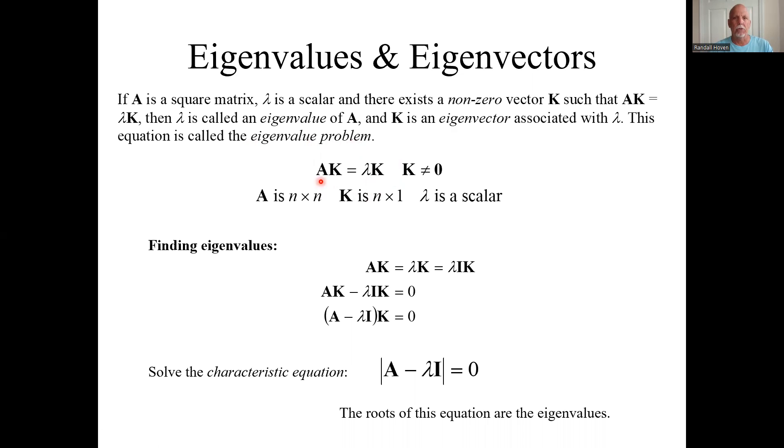You're given this square matrix A. We want to find the K's and the lambdas that make this a true statement, and the K's can't just be zero.